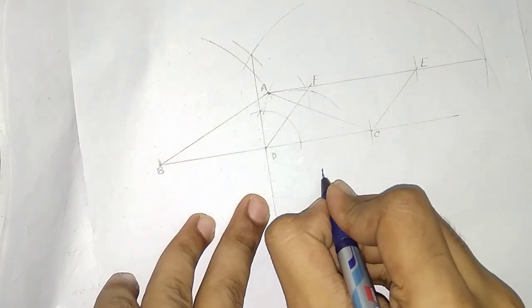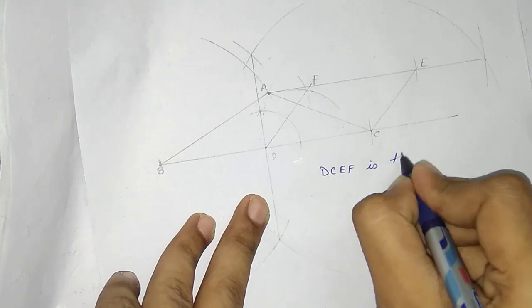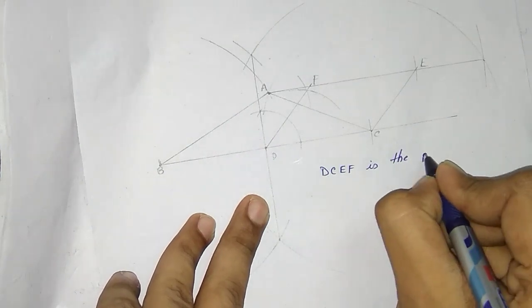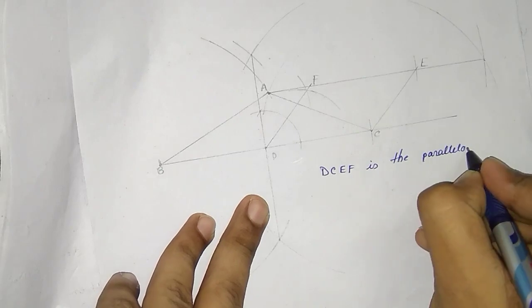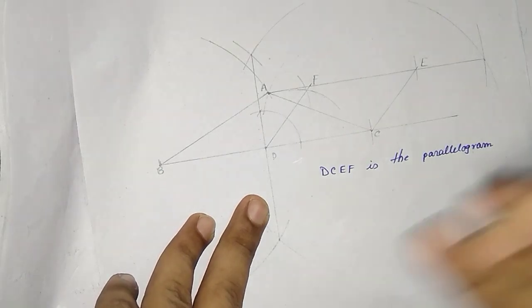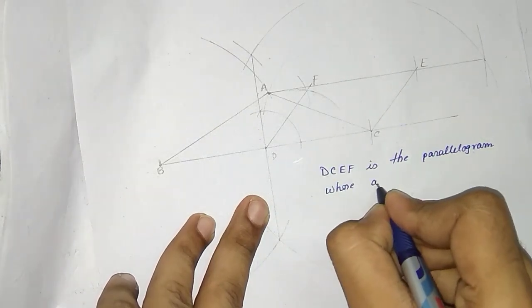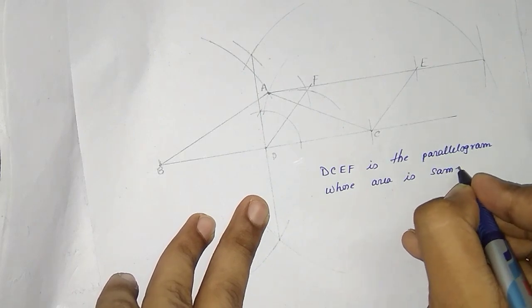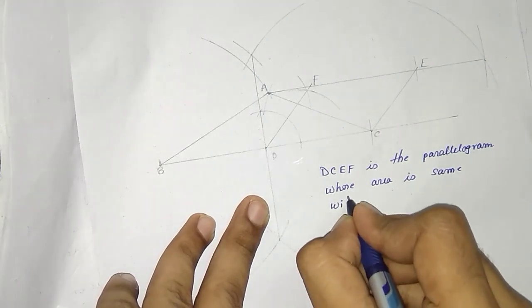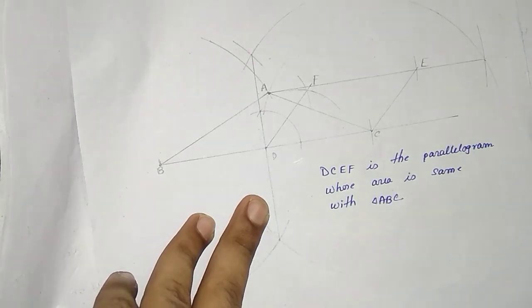So DCEF is the parallelogram whose area is the same as triangle ABC.